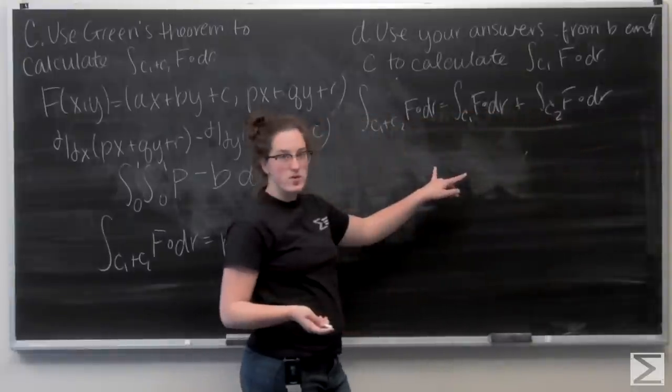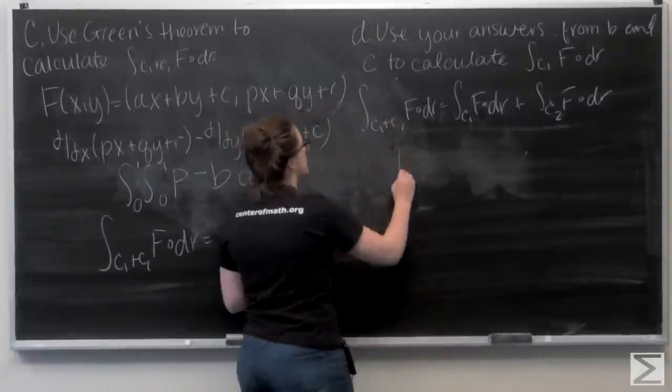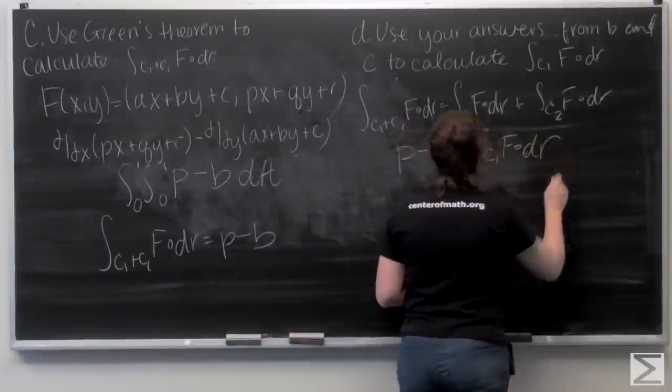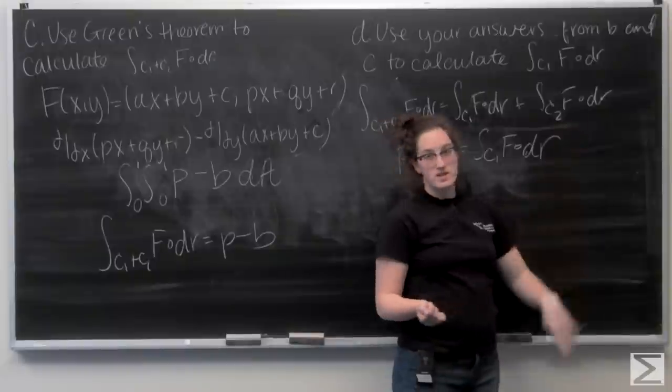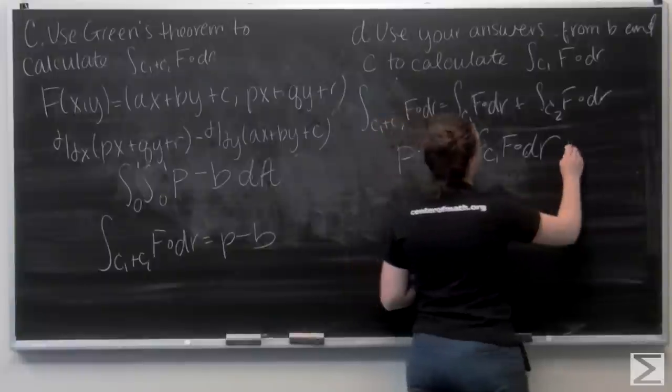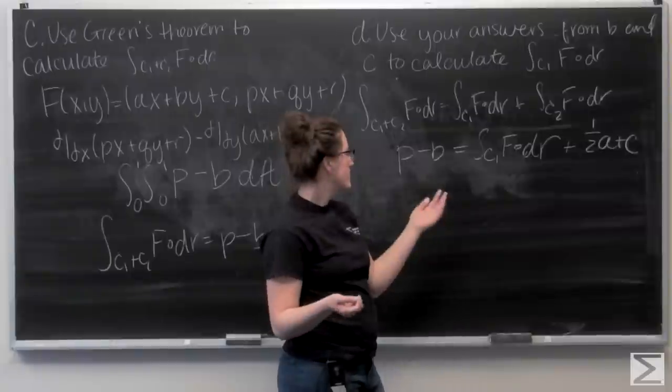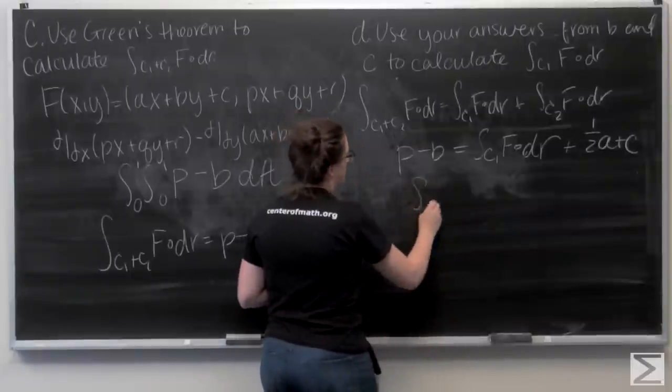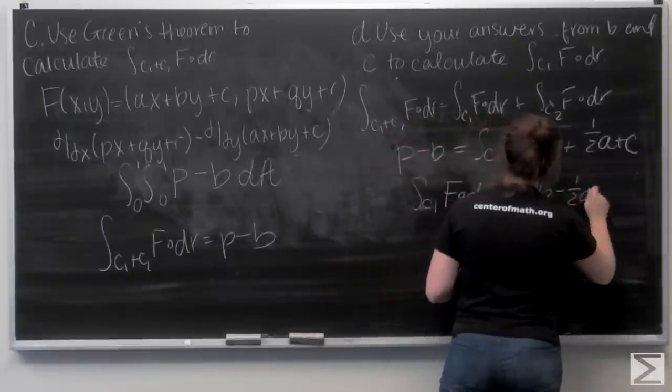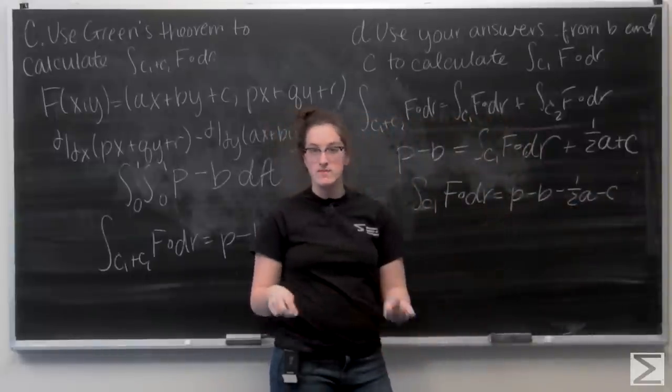I have two of these components already. I just found out that the line integral over c1 plus c2 is p minus b. The line integral over c1 is what I'm looking for. And then in part B, I found that the line integral over c2 is (1/2)a plus c. Now I can just solve this equation for the integral of f over c1. So I get p minus b minus (1/2)a minus c. And that's my answer.